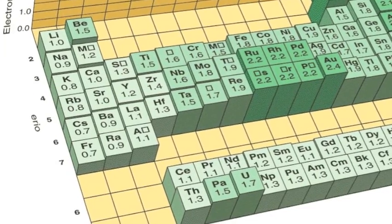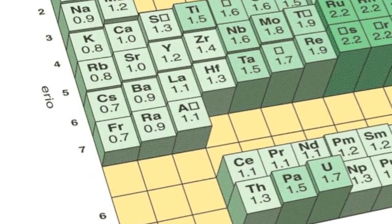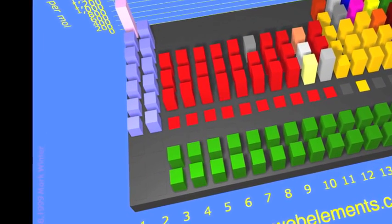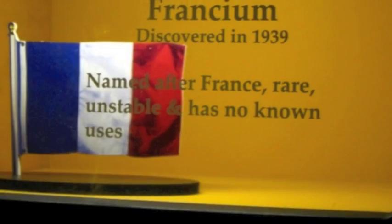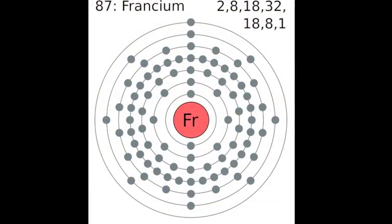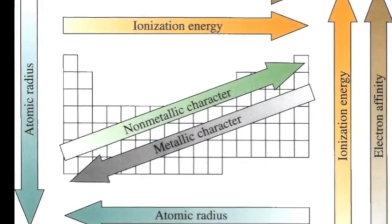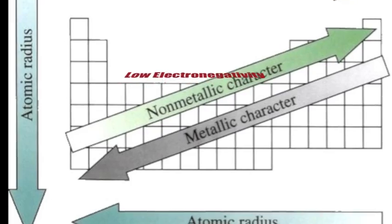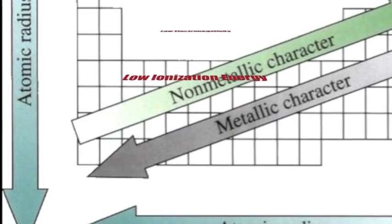The lower left side of the periodic table has low electronegativity. The lower left side of the periodic table has low ionization energy. Down there, giving up electrons all the time. The lower left side of the periodic table has low electronegativity. Low ionization energy.